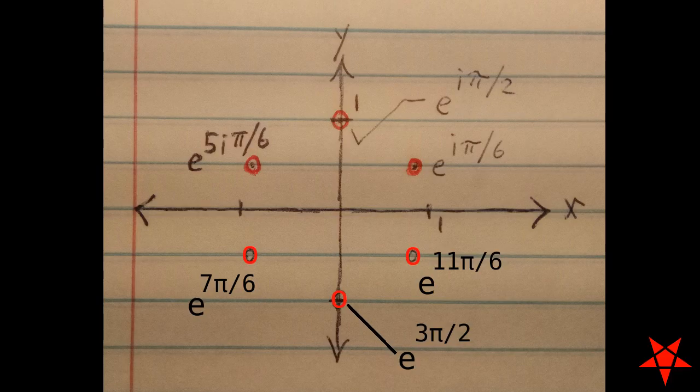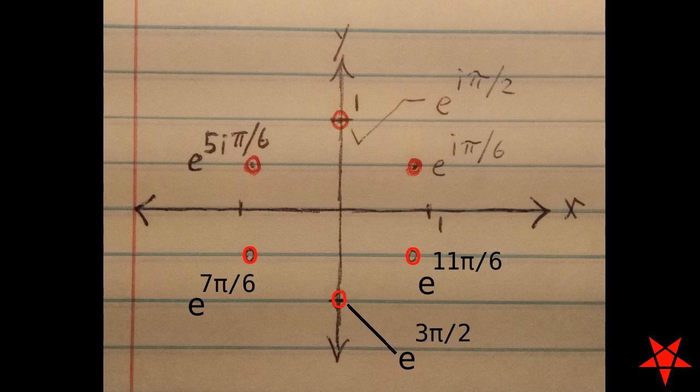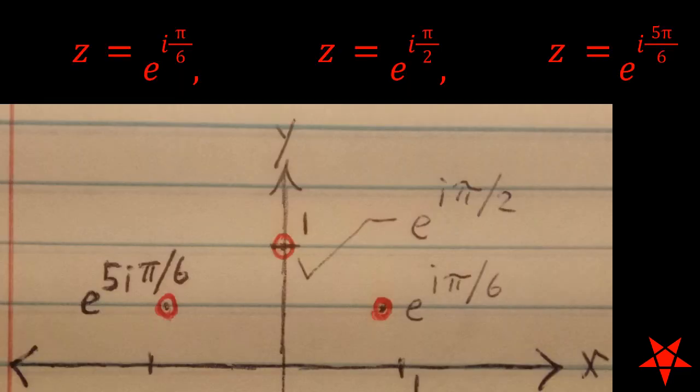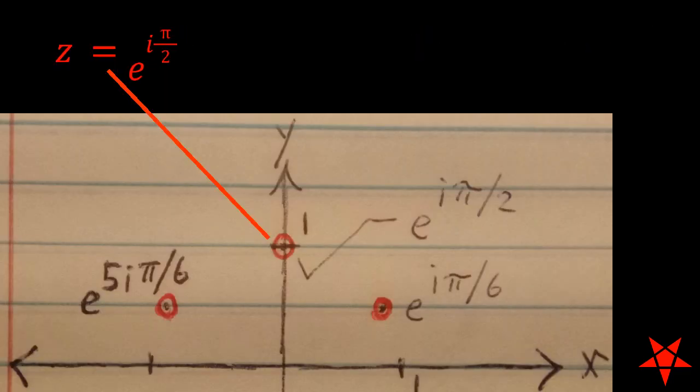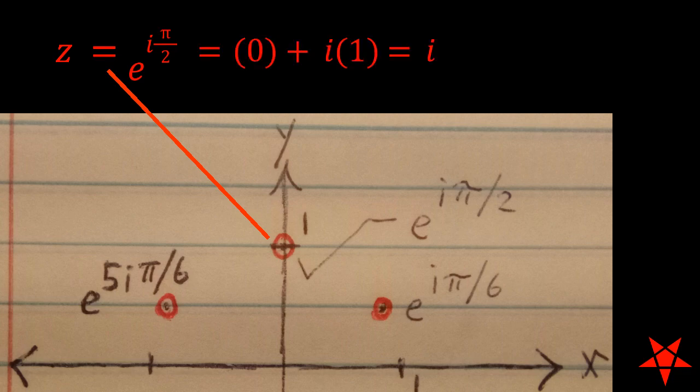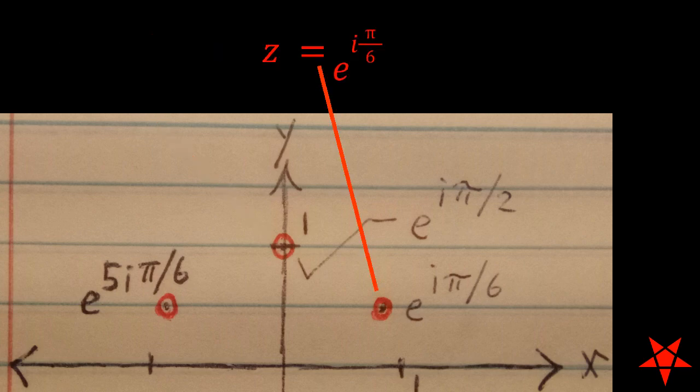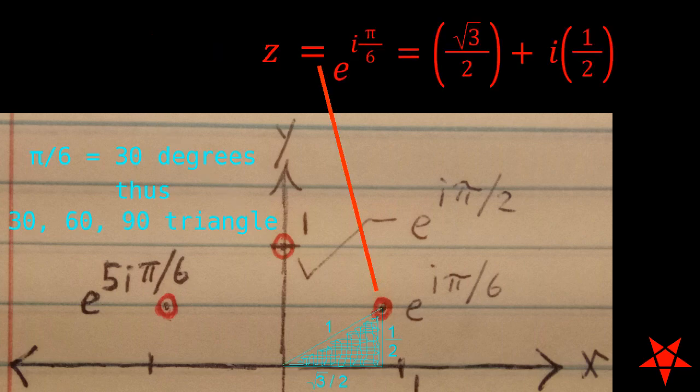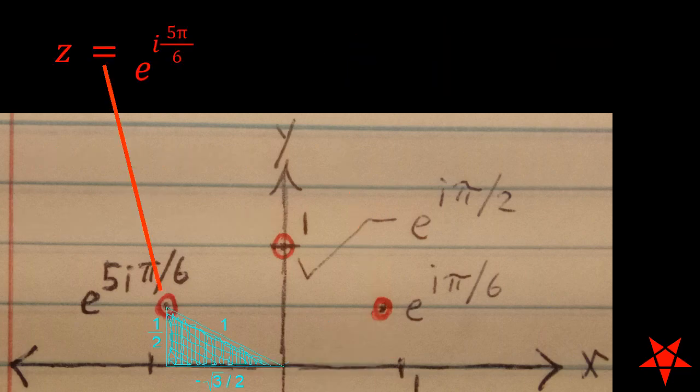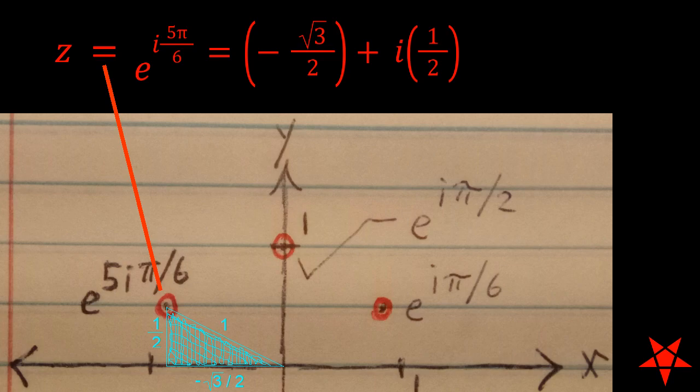Plotting the points, all of which fall on the unit circle, shows that nothing touches the real axis and we can now focus on the upper half of the plane. E to the i pi over 2 is located on the imaginary axis and can be seen to break down as 0 plus i times 1. A little bit of trigonometry shows us that the other two points align with the proportions of 30, 60, 90 triangles and this allows us to make quick work of breaking down their respective real and imaginary components.